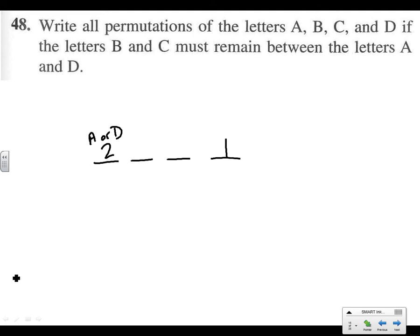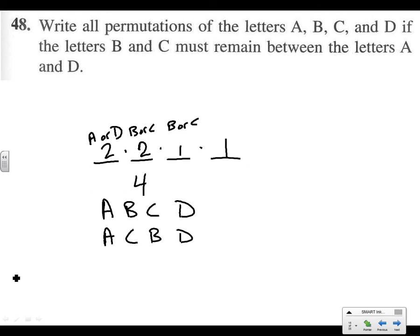In between a and d, we can have either b or c first — that's 2 options — and then there's only 1 way left to arrange the remaining letter. Multiplying all together: 2 × 1 × 2 × 1 = 4 options. The problem says to write all of them down: a-b-c-d, a-c-b-d, d-b-c-a, and d-c-b-a. Those are our four options.